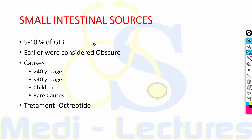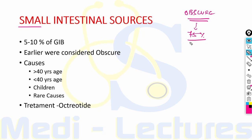Moving on to small intestinal sources of GI bleeding: previously, patients without a source on upper GI endoscopy or colonoscopy were labeled as obscure. With improved diagnostic modalities, 75% of previously obscure causes are now diagnosed as small intestinal. Small intestinal sources constitute about 5 to 10% of all GI bleeding; these were earlier considered obscure.